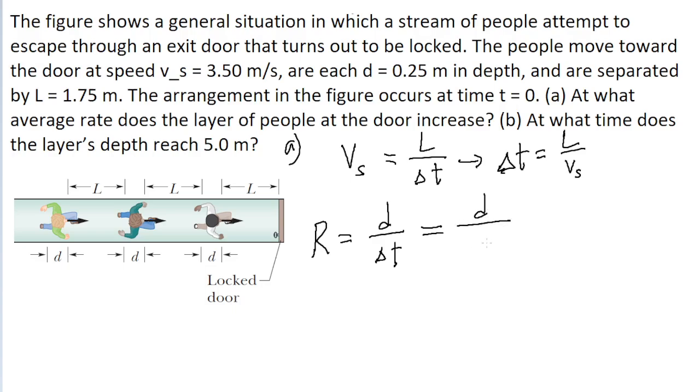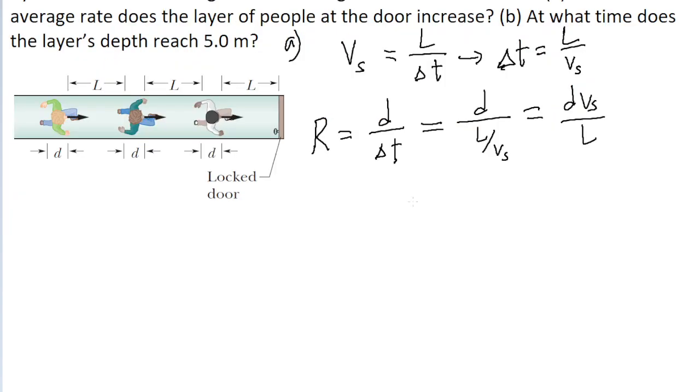So that's d divided by L over V sub S, or more simply, bringing the V sub S into the numerator, d V sub S divided by L. So we can find the rate at which people are reaching the door, or the rate at which the depth is increasing, by plugging in the values that were given in the problem.